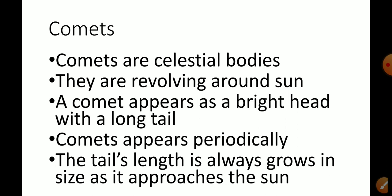Comets appear periodically. The tail present in the comet always grows in size as it approaches the sun — the closer it gets to the sun, the longer the tail becomes.